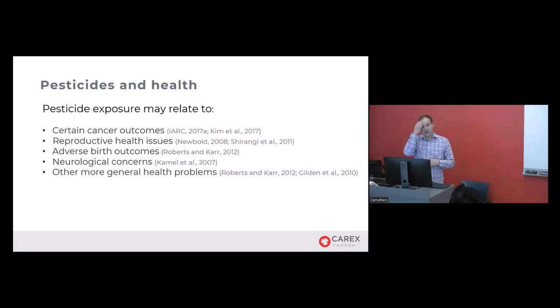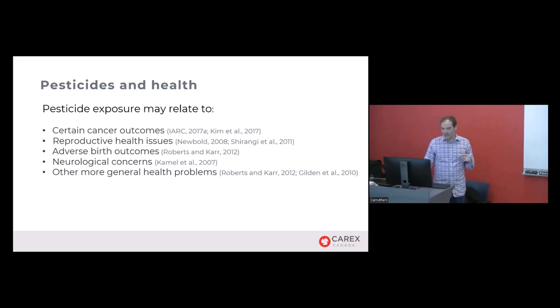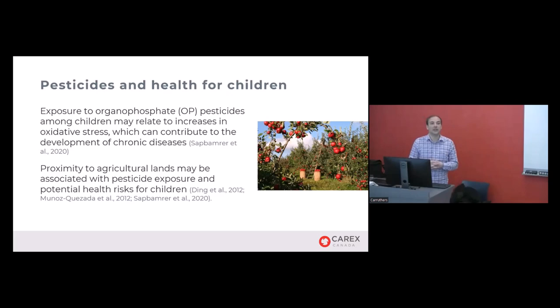Pesticide exposure may relate to certain cancer outcomes, reproductive health issues, adverse birth outcomes, neurological concerns, and other health problems. There are mixed studies, so there isn't always a concrete link, but relationships have been expressed. For children particularly, there's been extensive study on organophosphate pesticides, with solid evidence relating to increased oxidative stress and development of chronic diseases. Proximity to agricultural land has shown higher potential risks for children due to elevated exposure levels.